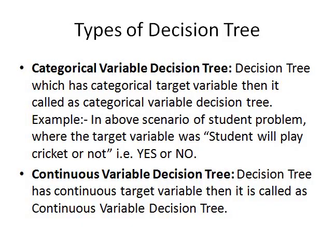Welcome to this tutorial on decision trees. We'll cover basic theory regarding the decision tree. First, we look at the types of decision trees. There are two types: categorical variable decision tree and continuous variable decision tree. A decision tree with a categorical target variable is called a categorical variable decision tree, also called a classification tree. A decision tree with a continuous target variable is called a continuous variable decision tree, also called a regression tree.